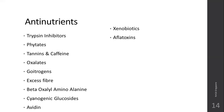Aflatoxins can cause liver damage. They are produced by a specific kind of fungus called Aspergillus flavus, which creates a toxin called aflatoxin found in groundnuts. Polyphenols: many antioxidant-rich items like amla have high polyphenols, and even though vitamin C is present in abundance, these polyphenols can affect the bioavailability of iron. These are some examples of anti-nutrients.